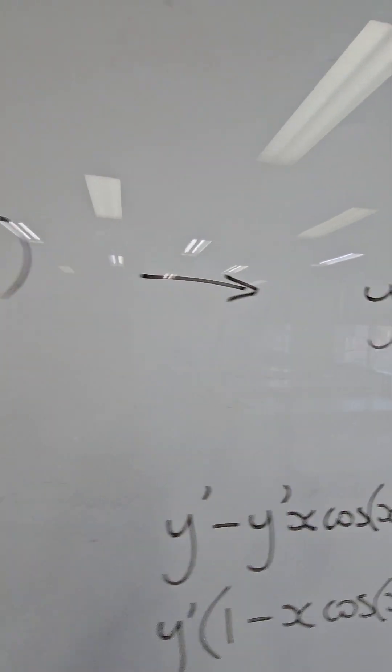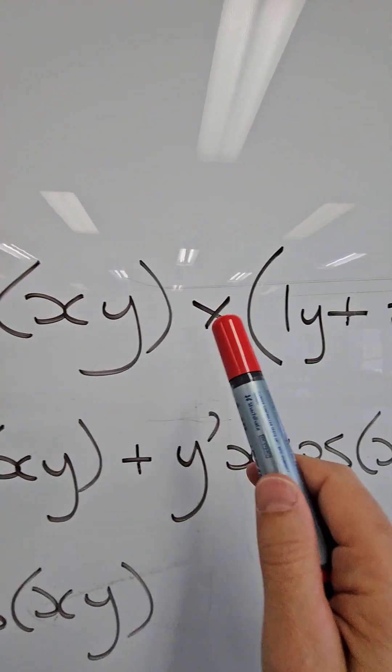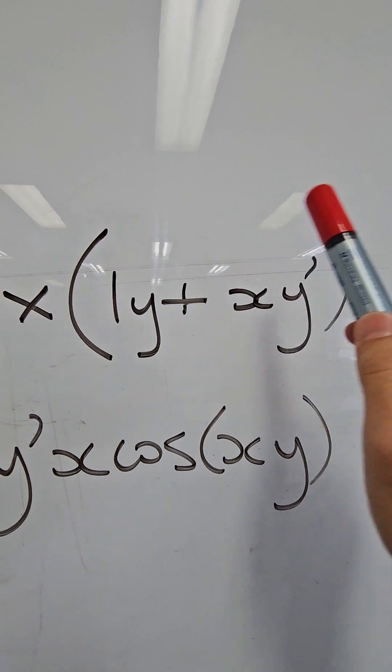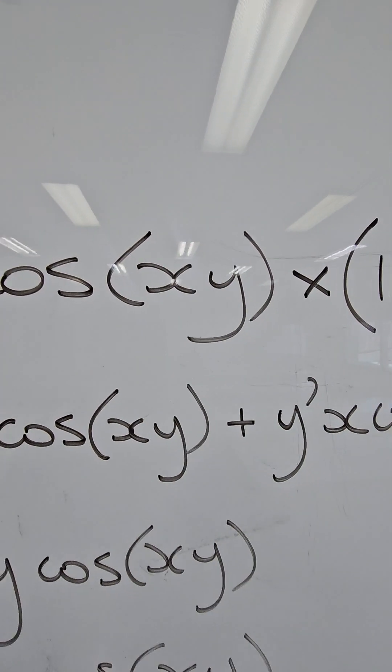Differentiating y we get y dash, and differentiating sine xy we get cos xy times 1 times y plus x times y dash in brackets. We get that by differentiating xy using the product rule.